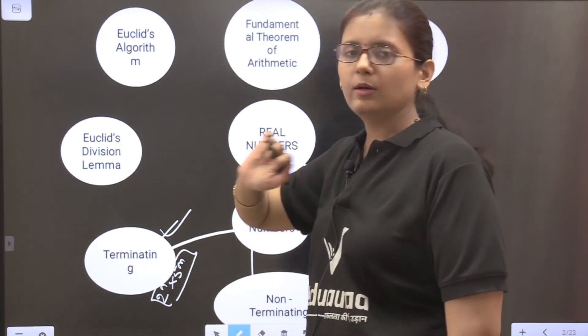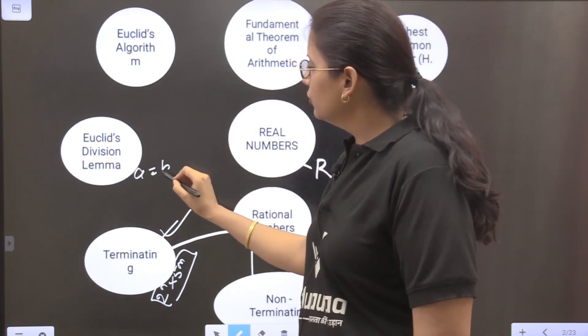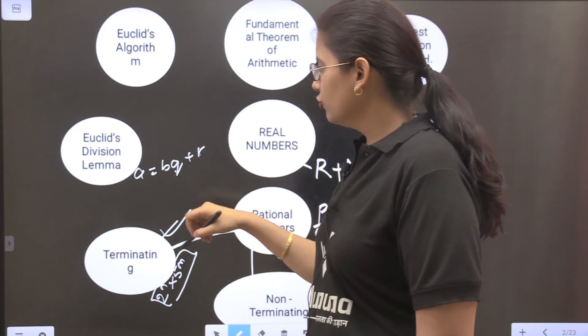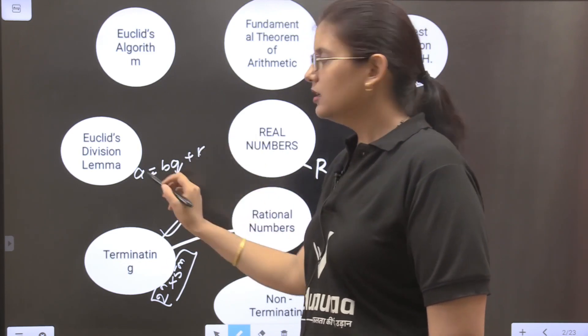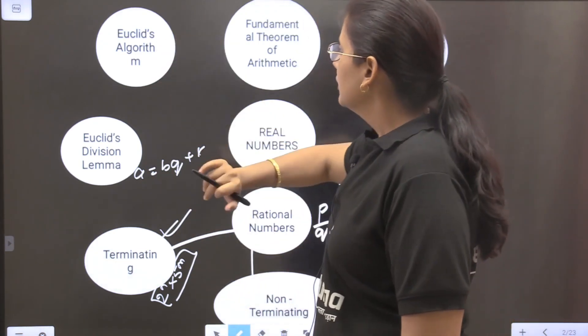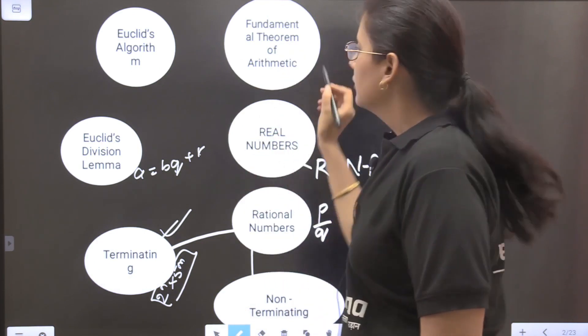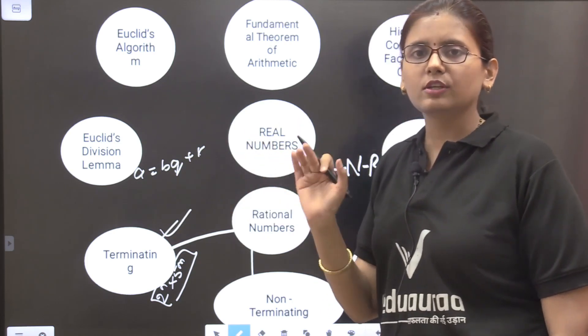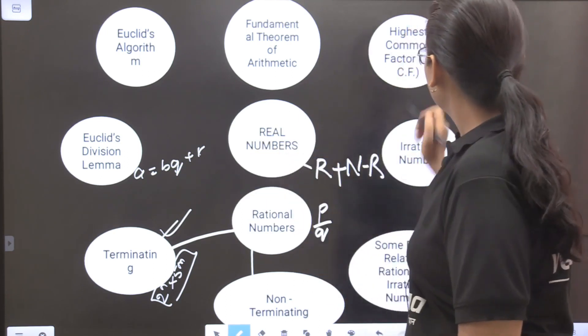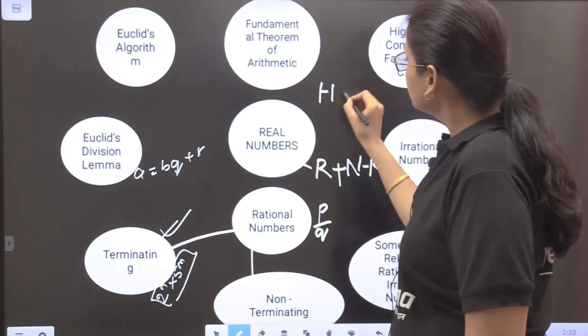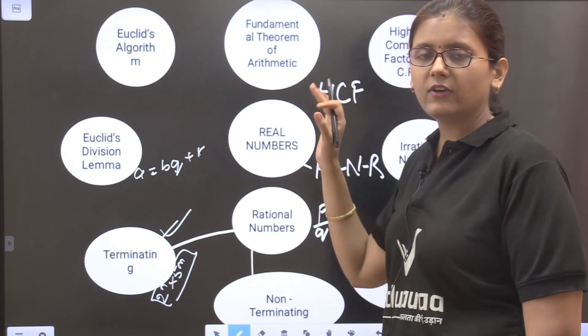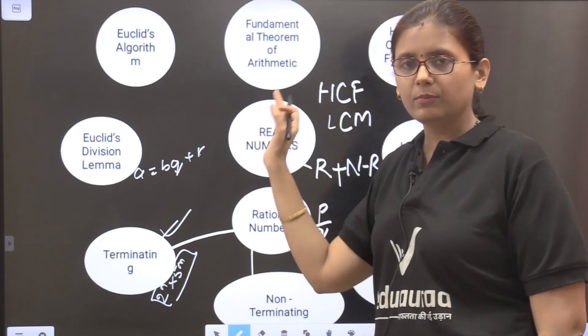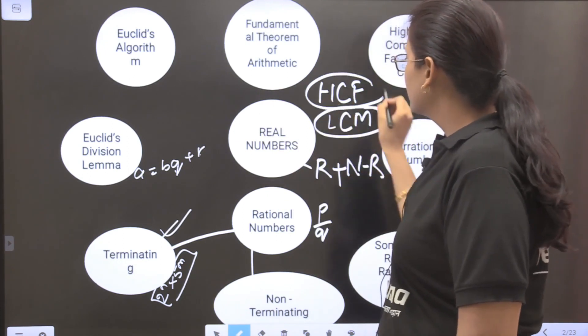Now Euclid's division lemma: it is A equals BQ plus R where A and B are integers and Q and R are such that Q is the quotient, R is the remainder, B is the divisor and A is the dividend. Now fundamental theorem of arithmetic states that every number can be expressed in the form of its prime factors and that expression is unique but the order in which it occurs is not unique. Then HCF and LCM: HCF is the highest common factor that can divide the two numbers and the LCM is the lowest common multiple.